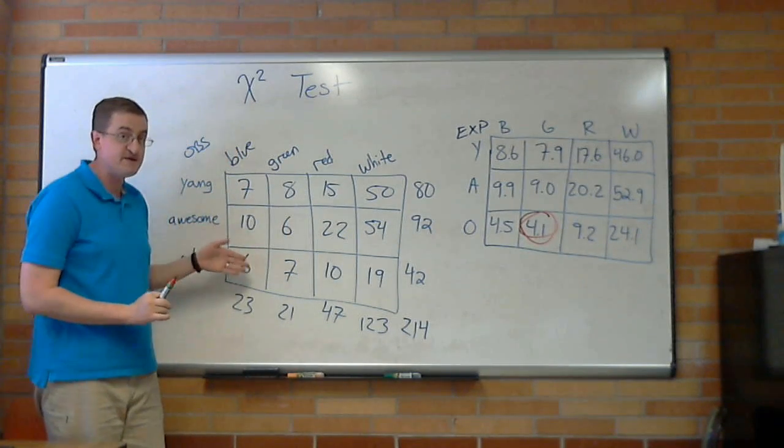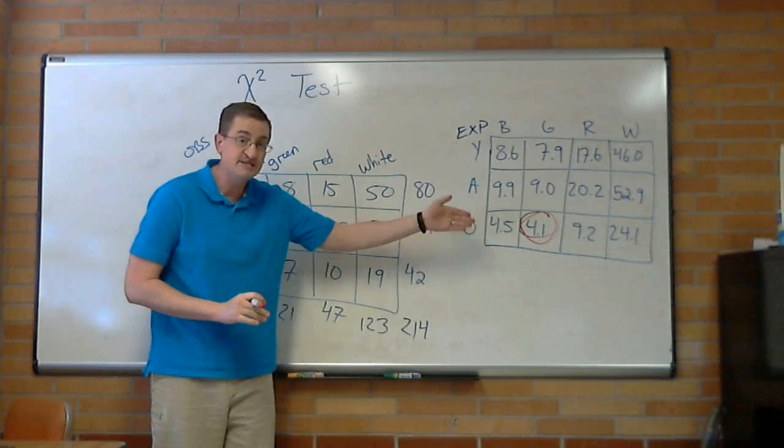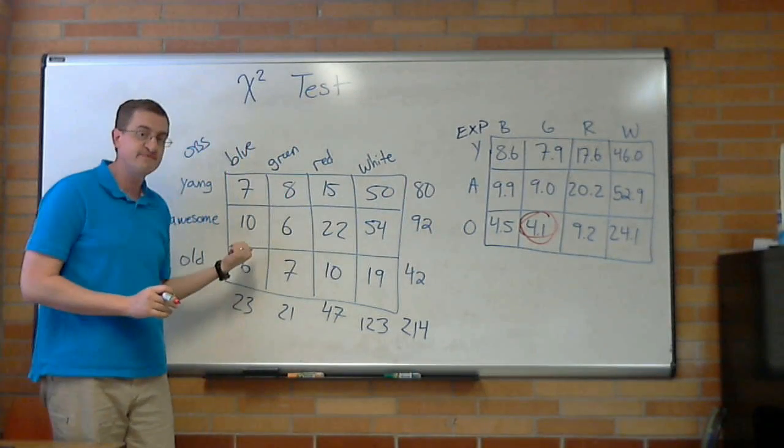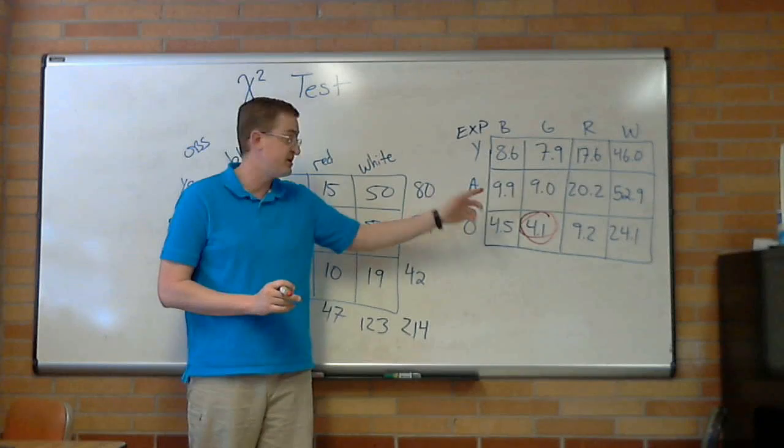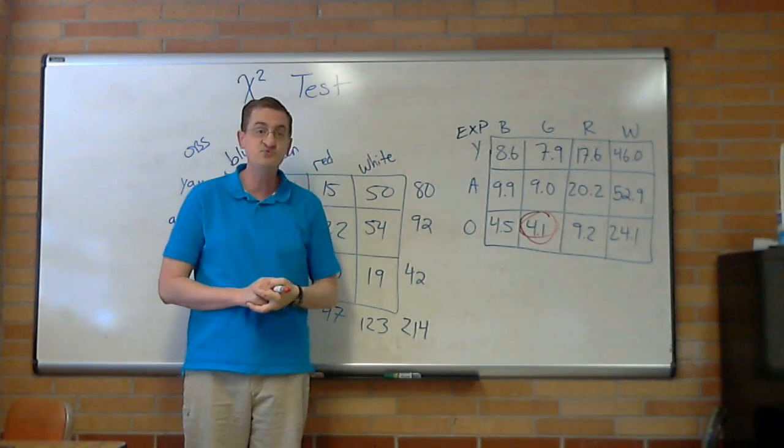All the observed values are bigger than five, but that doesn't matter, it's the expected values that matter. You can have observed values less than five, and it wouldn't matter as long as the expected were greater. It's not. You're stuck. You can't do this.